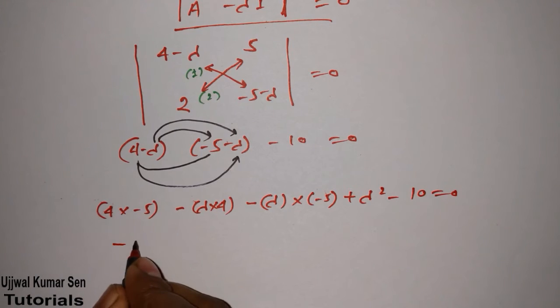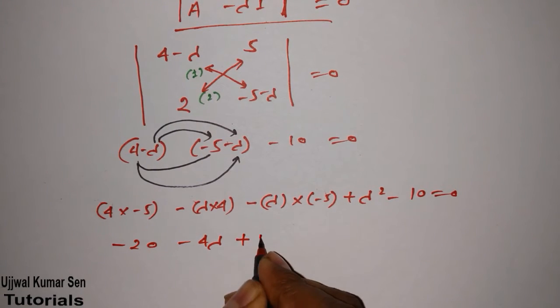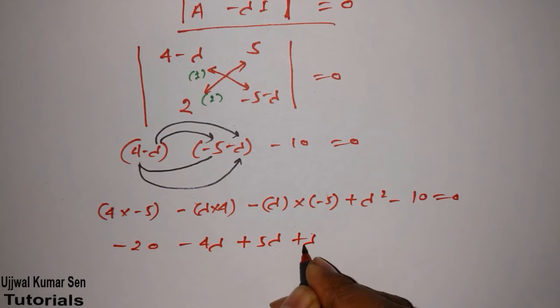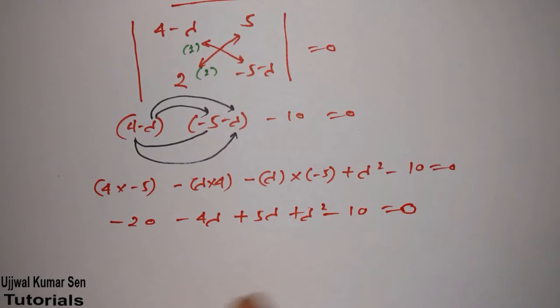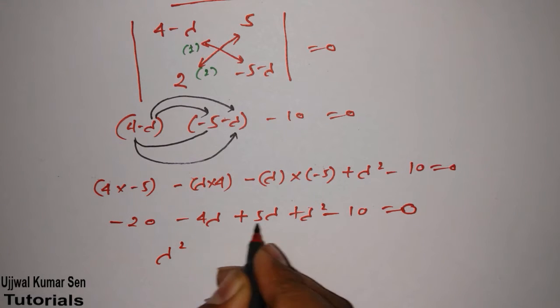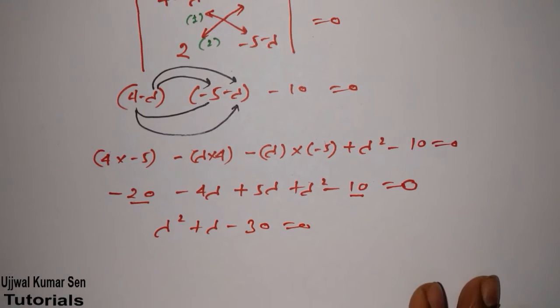This will become minus 20 minus 4 lambda plus 5 lambda and lambda square minus 10 equal to zero. So lambda square minus 4 lambda plus 5 lambda minus 20 minus 10, minus 30 equal to zero.